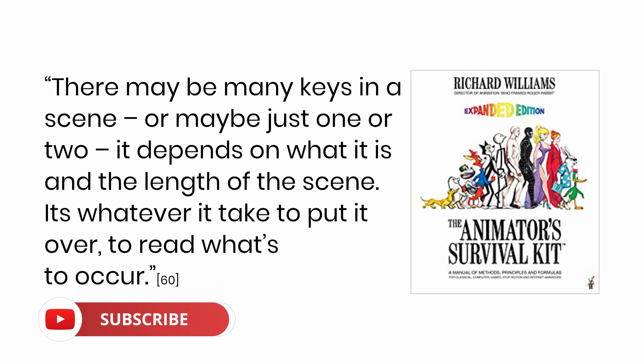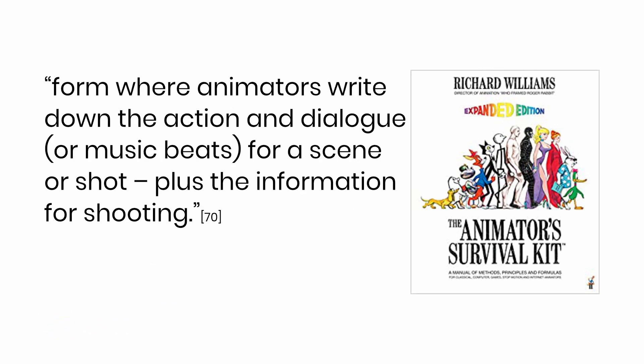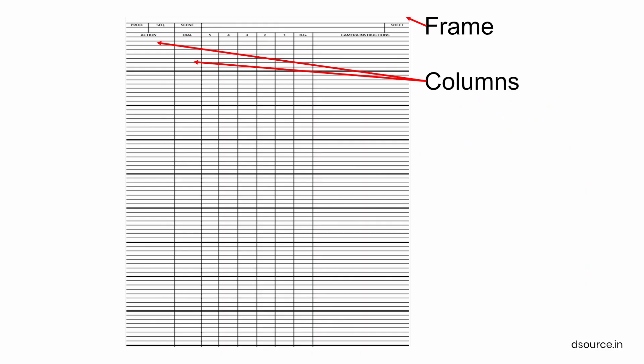The exposure sheet, also called the X-sheet, is a form where animators write down the action and dialogue or music beats for a scene or shot, plus the information for shooting. The horizontal line is a frame of the shot and the columns are the levels of animation.